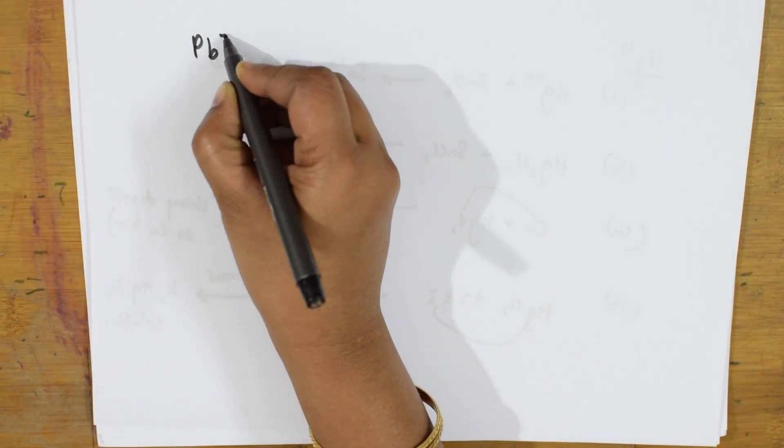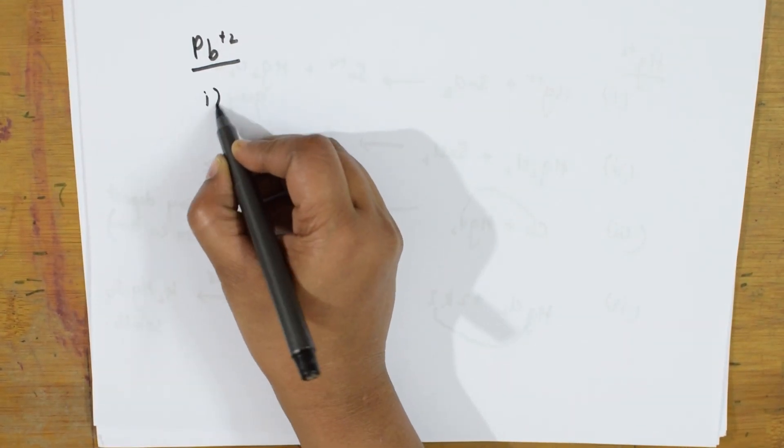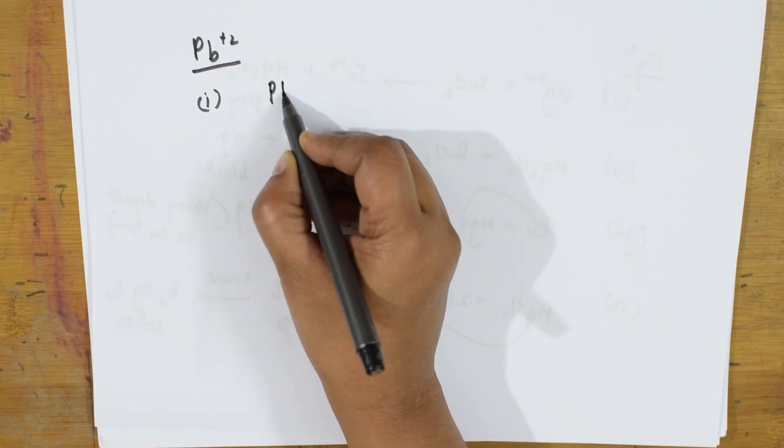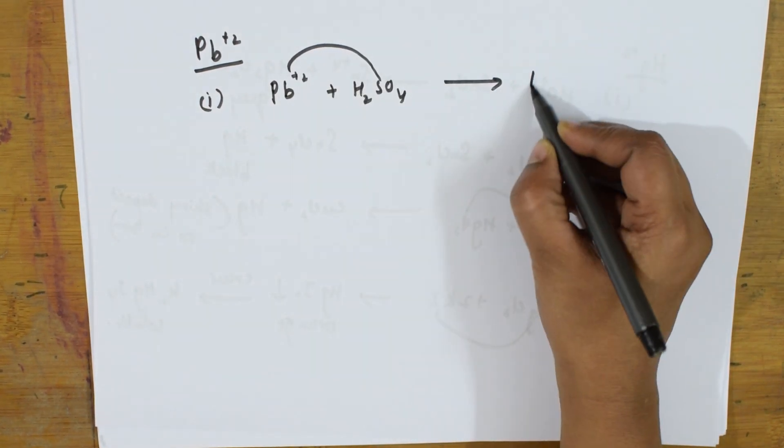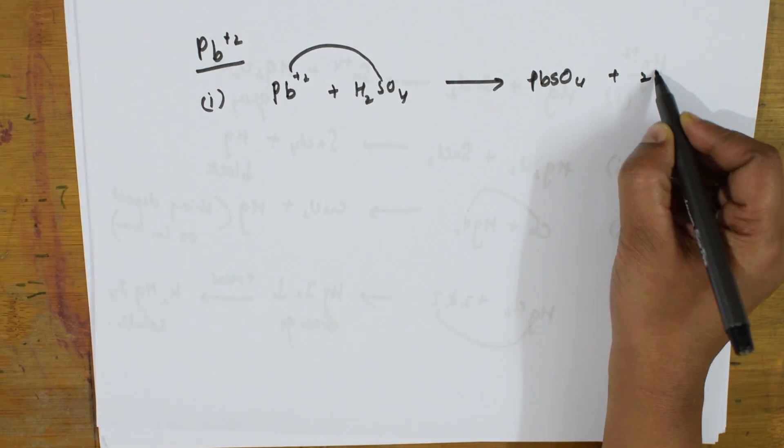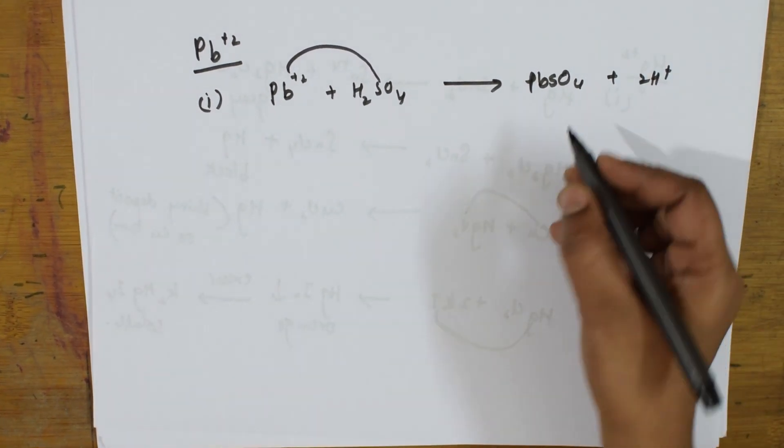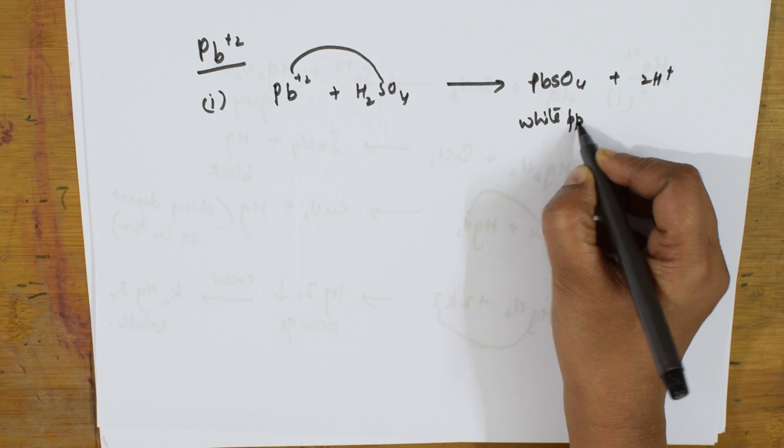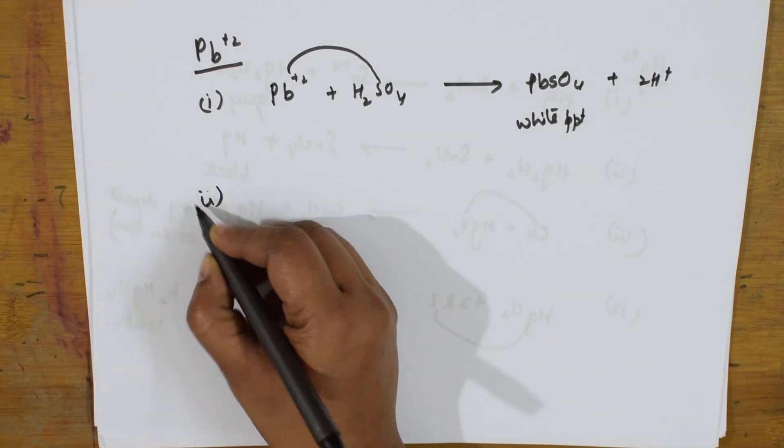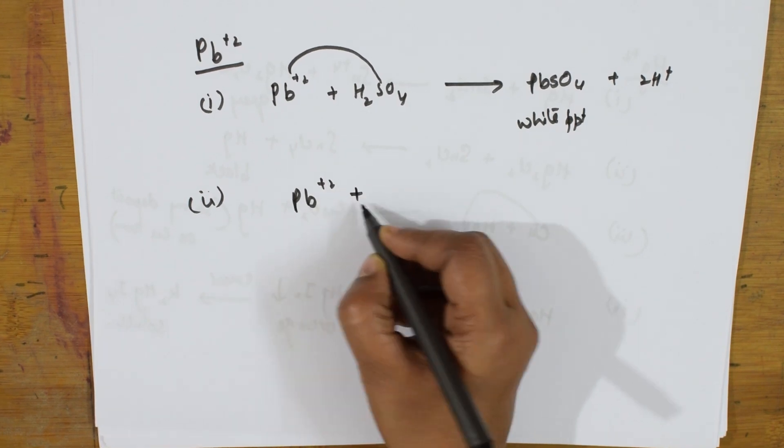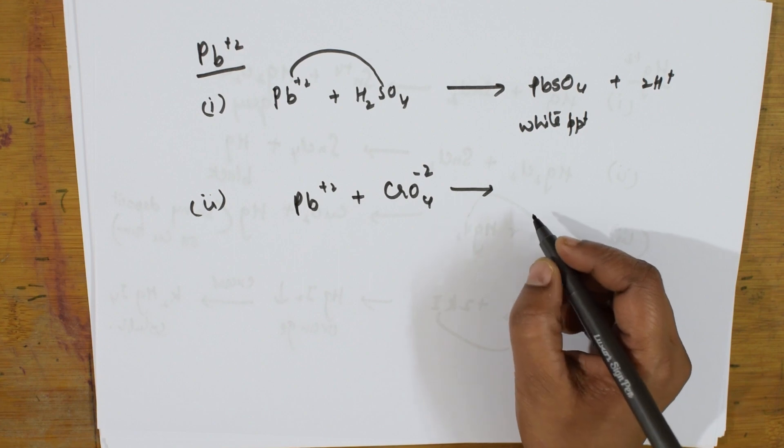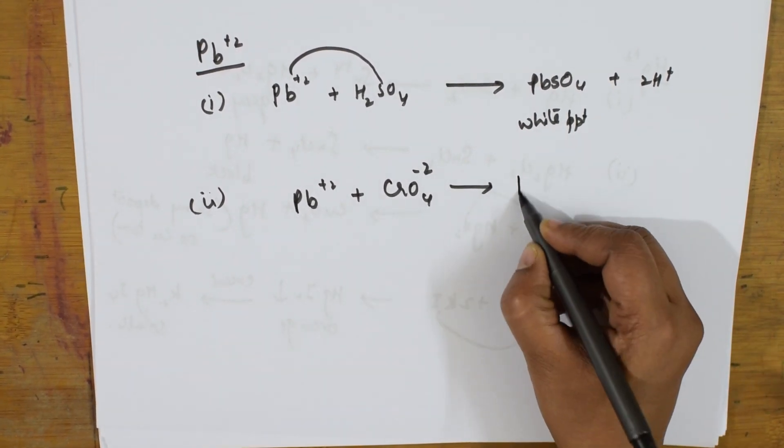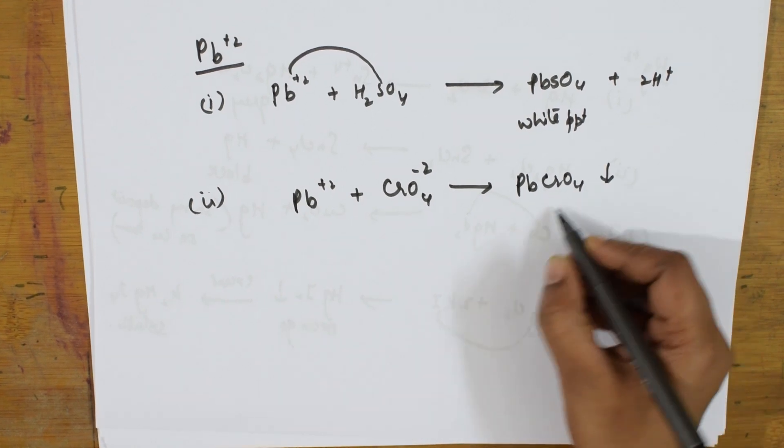If I have to see the test for lead, Pb²⁺, what we can try? We can take Pb²⁺ and add sulfuric acid which we have done. What do we get? We get lead sulfate and 2H⁺. What is the color of lead sulfate? It is white PPT. Further you can also add Pb²⁺ plus chromate, that is potassium chromate. What do we get? We get a yellow PPT of lead chromate.